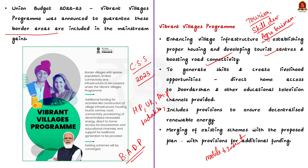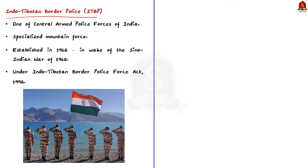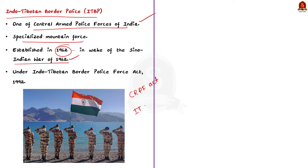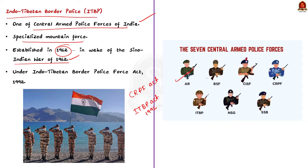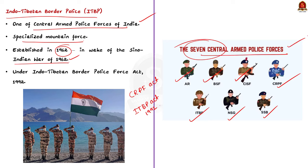Now let us see about the Indo-Tibetan Border Police (ITBP). It is one of the Central Armed Police Forces of India — a specialized mountain force created in 1962 during the Indo-China War. ITBP was initially raised under the CRPF Act, but in 1992 Parliament enacted a separate act for ITBP. Including ITBP, there are seven Central Armed Police Forces: Assam Rifles, Border Security Force, Central Industrial Security Force, Central Reserve Police Force, Indo-Tibetan Border Police, National Security Guards, and Sashastra Seema Bal. These seven Central Armed Police Forces do not come under the control of the army; they function under the Ministry of Home Affairs.